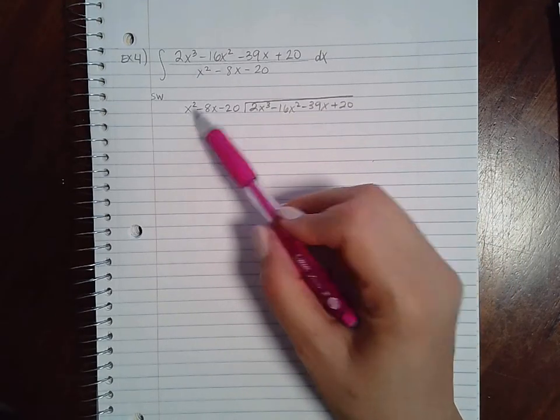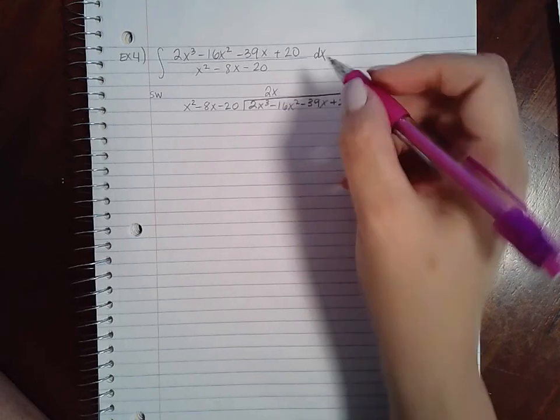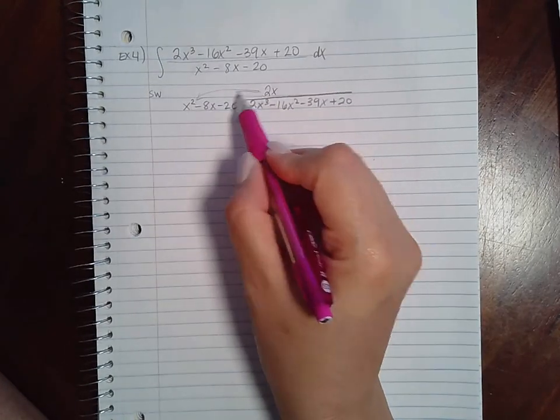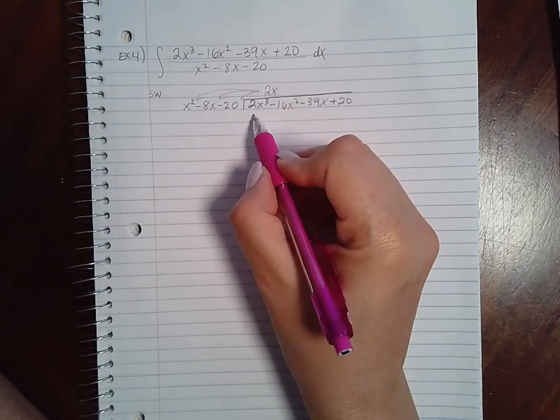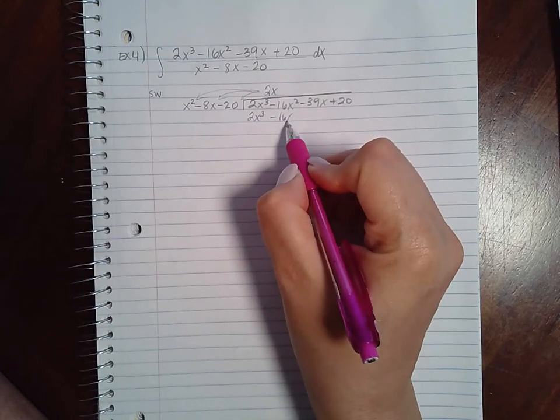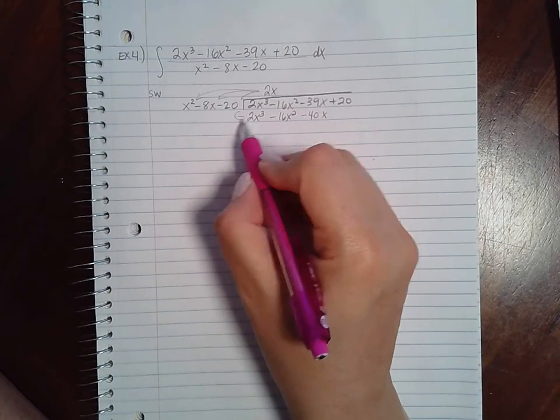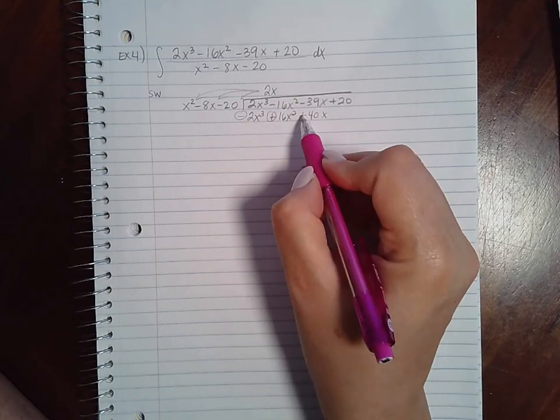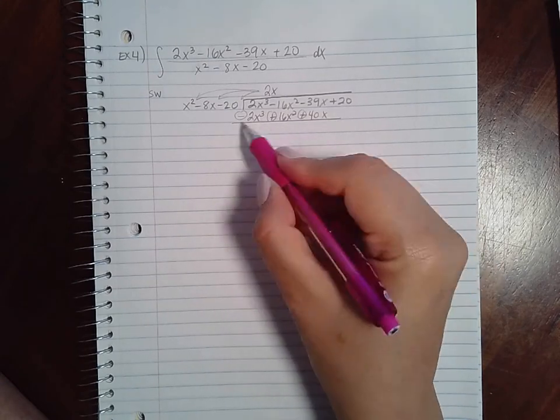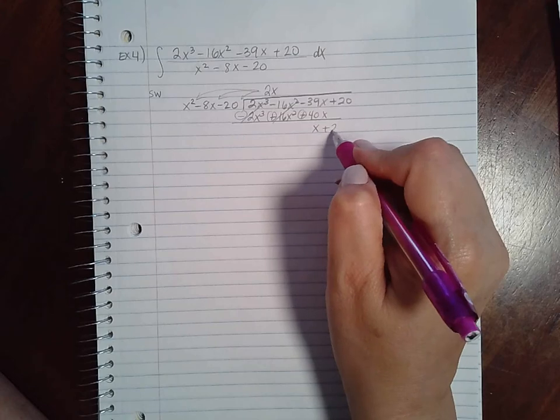So we have x goes into 2x squared, or 2x cubed, 2x times. So then we distribute this, and we get 2x cubed minus 16x squared minus 40x. And then we change all of the signs, and this cancels, this cancels, and I get x plus 20.